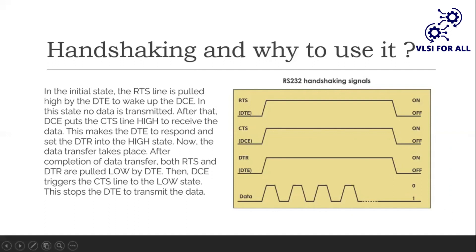In the signal chart showing how handshaking is done in RS-232: in the initial state, the RTS line is pulled high by the DTE to wake up the DCE. The DCE then puts the CTS line high to receive data, which makes the DTE respond and set the DTR to high. Data transfer then takes place. After completion of data transfer, both RTS and DTR are pulled low by DTE, then DCE triggers the CTS line low, stopping the DTE from transmitting. Communication is then complete.